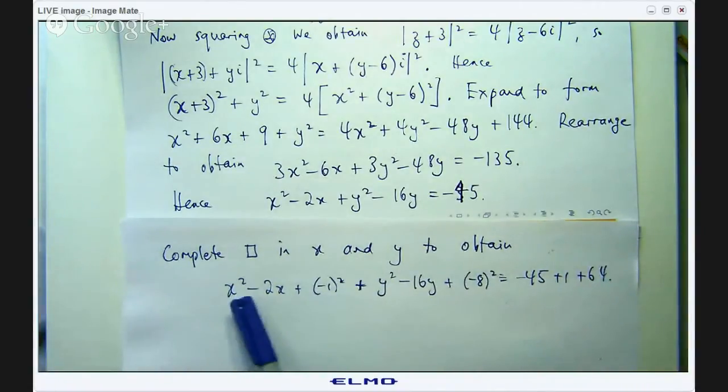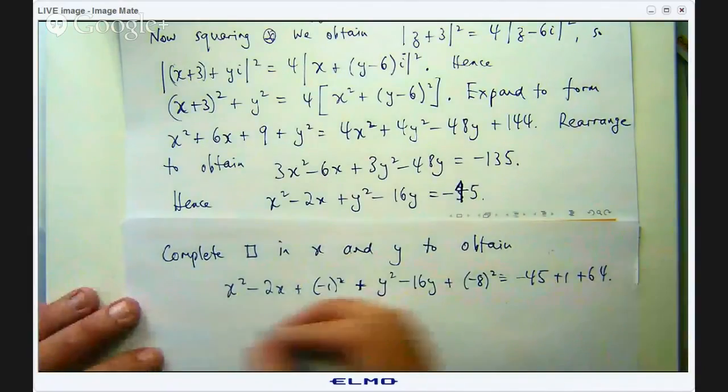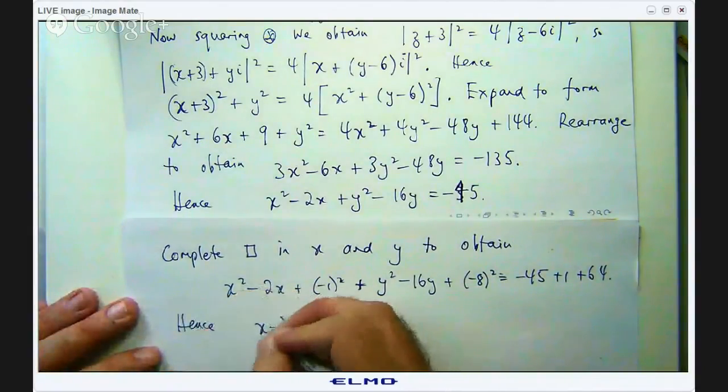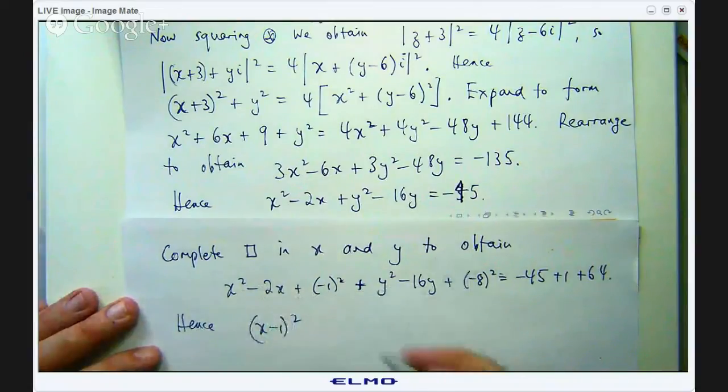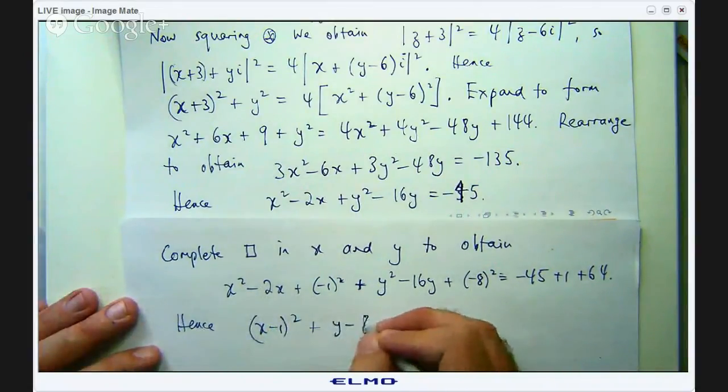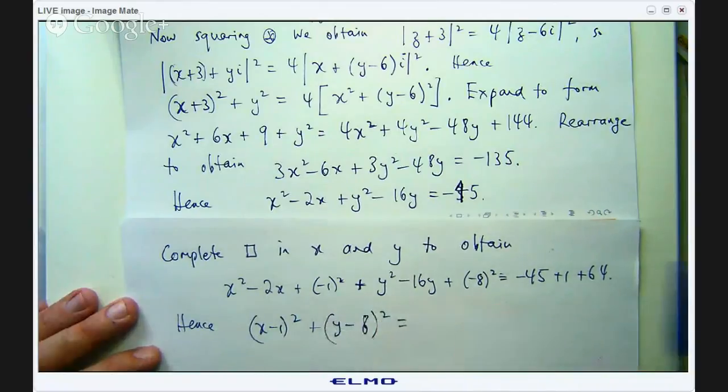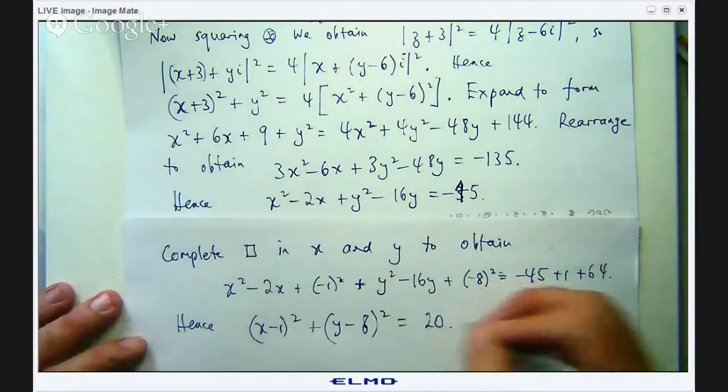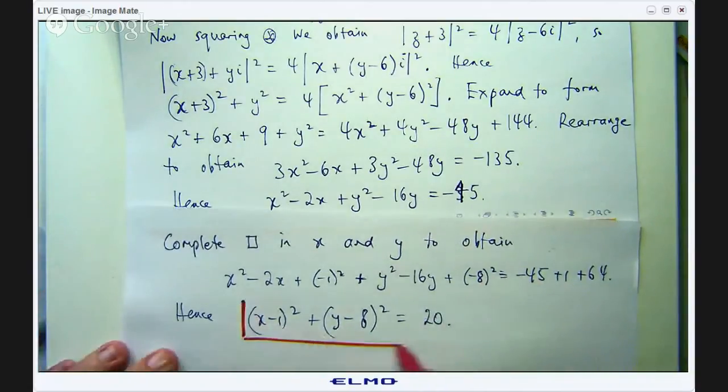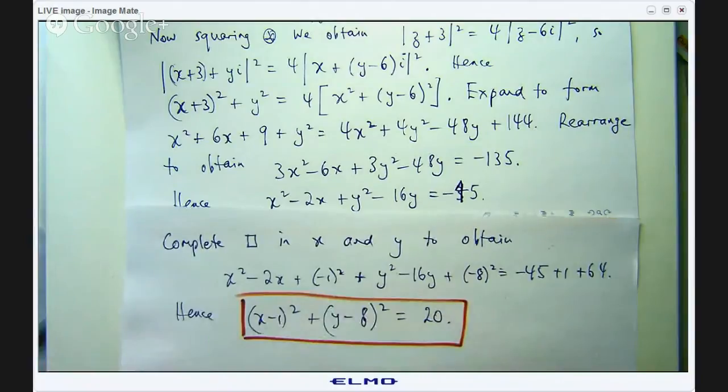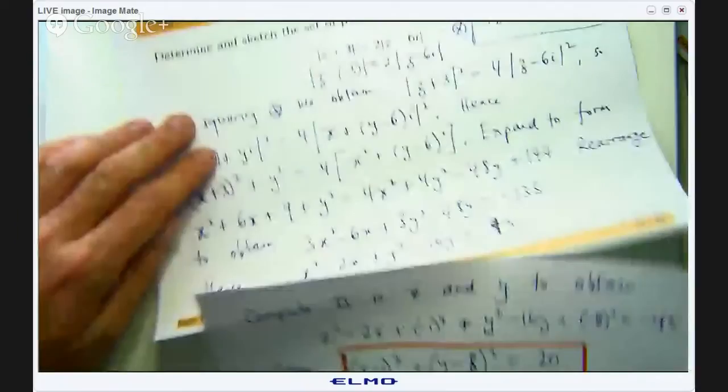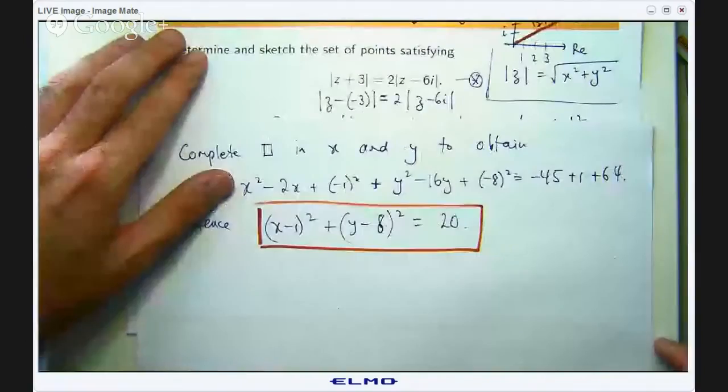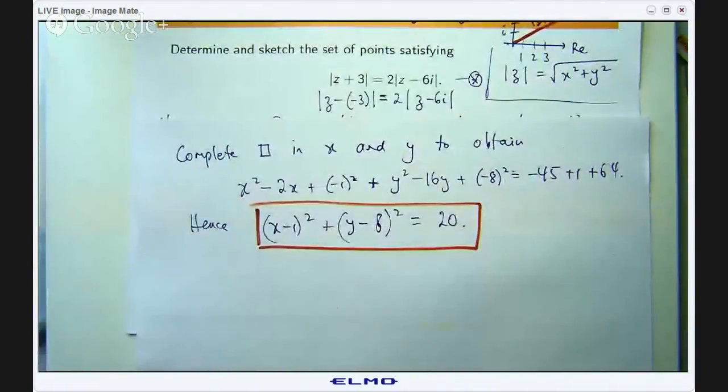So negative 45 plus 1 plus 64. So now I can just simplify this. It will be x minus 1 all squared plus y minus 8 all squared equals whatever this is. So that will be 65 minus 45 which is 20. So now we have the form of a recognizable curve. It is going to be a circle with radius root 20 and centre at 1 plus 8i.